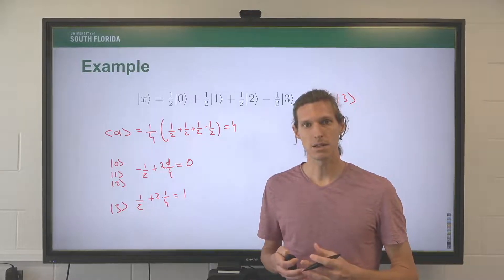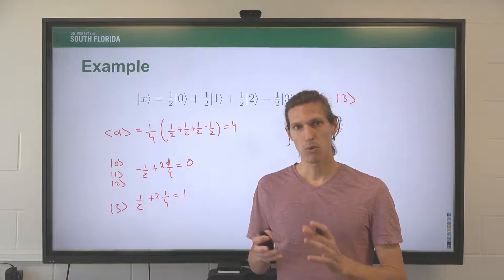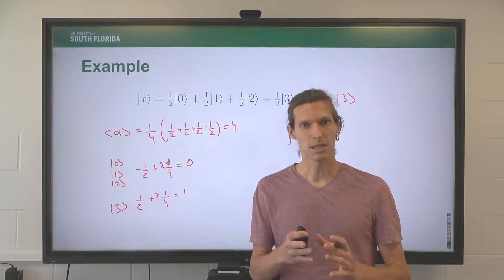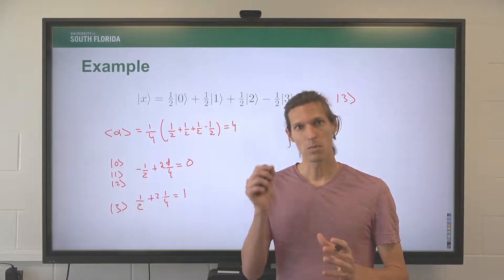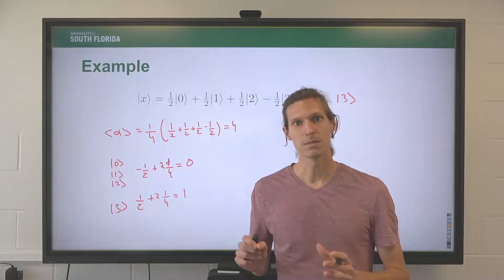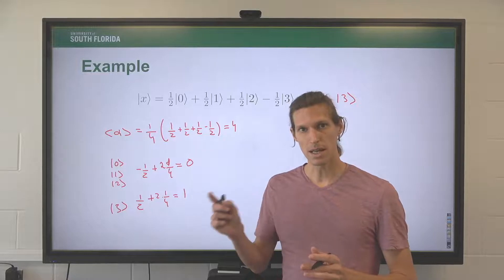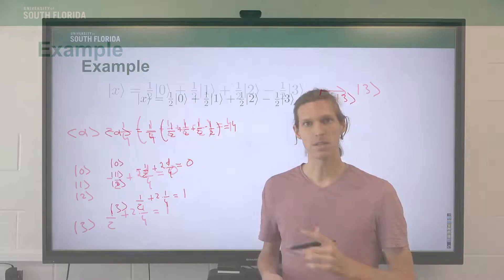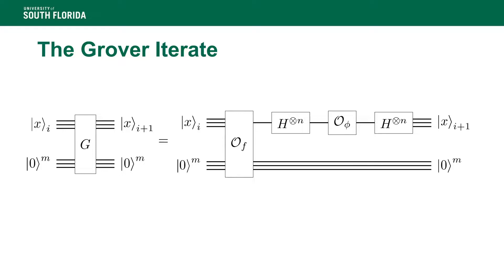This is really the basis of Grover's algorithm: prior to the inversion about the mean, there is an oracle call that multiplies by minus one the marked elements in the superposition. Then the inversion about the mean amplifies them. This is what one Grover iterate — one iteration of Grover's algorithm — looks like: first the oracle call to apply minus one to all marked elements, then the inversion about the mean to amplify their amplitude.